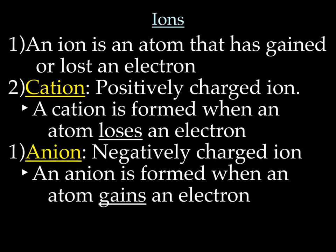Let's do a quick overview of ions. An ion is an atom that has gained or lost an electron. So if an atom loses or gains an electron, it has a charge. The definition of an atom is that it has no charge, so once it gains or loses an electron, it can no longer be called an atom — it has to be called an ion, which is an atom with a charge.